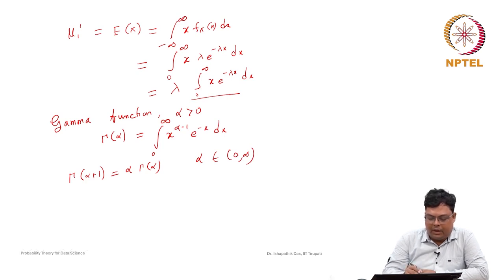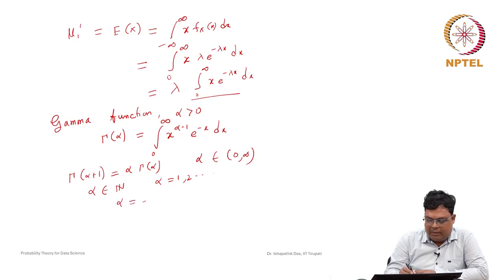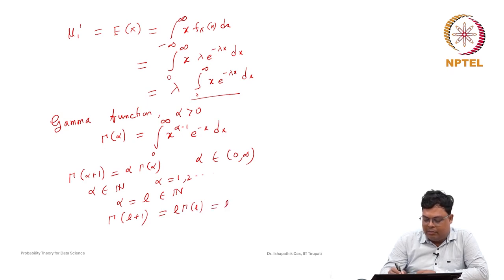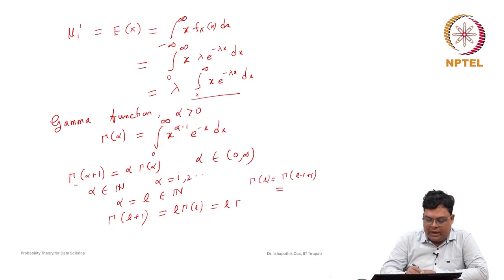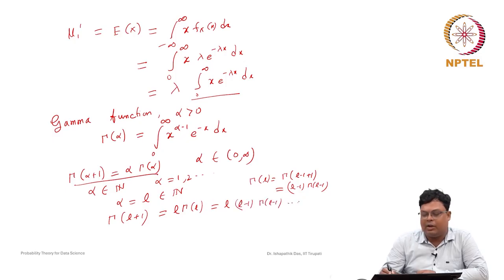When alpha is an integer — say alpha equals a natural number l — then Gamma(l+1) = l * Gamma(l). Applying this recursively: Gamma(l) = (l-1) * Gamma(l-1), and so on. This continues until we reach l * (l-1) * (l-2) * ... * 1 * Gamma(1). We can continue up to 1 * Gamma(1).